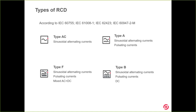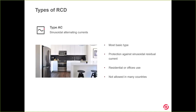Finally, type B covers sinusoidal alternating currents, pulsating currents, and — the key point — DC current. This is very, very important and I want to put the focus on that feature. Let's move on with the webinar and see each type of RCD in more depth.